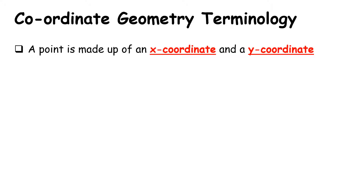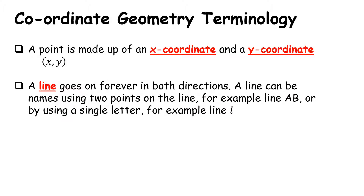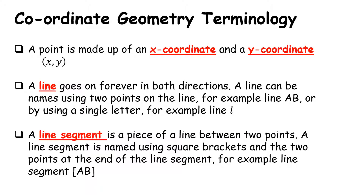Let's look at some terminology. A point is made up of an X coordinate and a Y coordinate. As you work through questions it's important to understand whether they're asking for a point, an X value, or a Y value — make sure you give exactly what the question asks for. A point is written as (X, Y) in brackets. A line goes on forever in both directions and can be named after two points on it, such as line AB, or given a single letter like L. A line segment is a piece of a line between two points, written in square brackets, e.g. [AB].